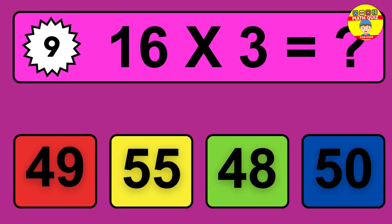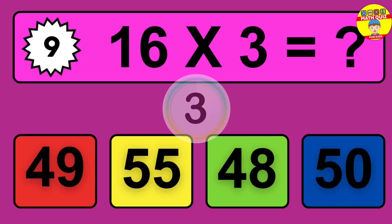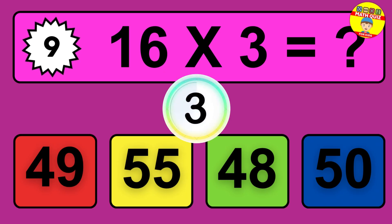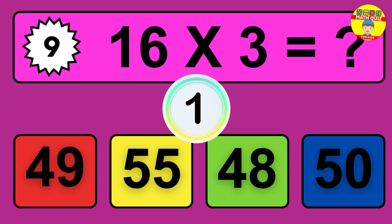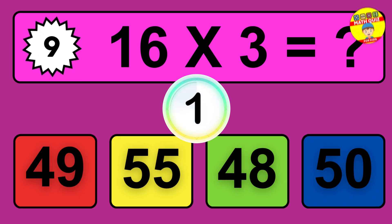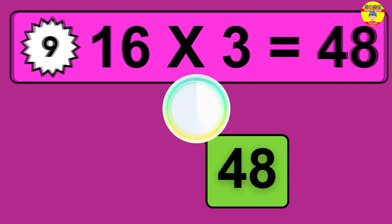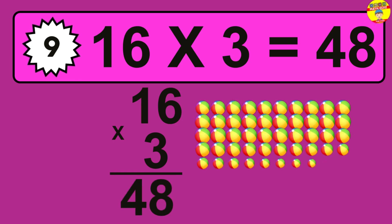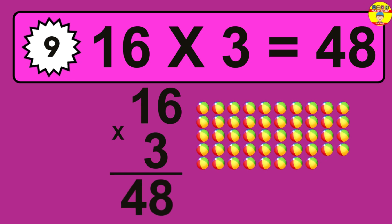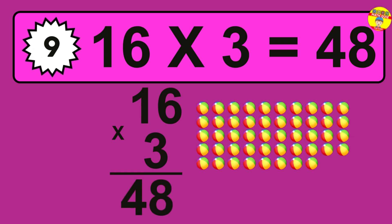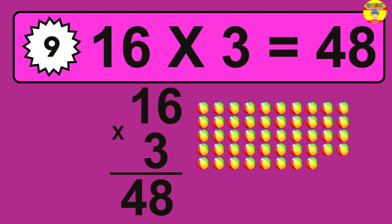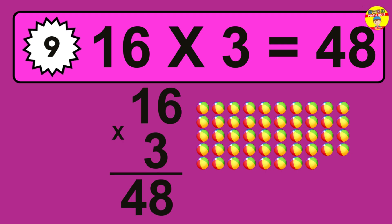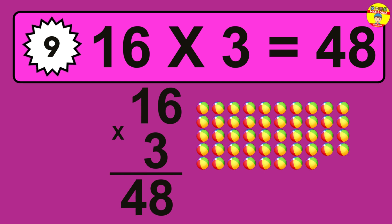Question nine: 16 times 3 equals what? The answer is 16 times 3 is 48. To calculate, we have 16 groups with 3 balls each. So how many balls do we have? 48 balls.